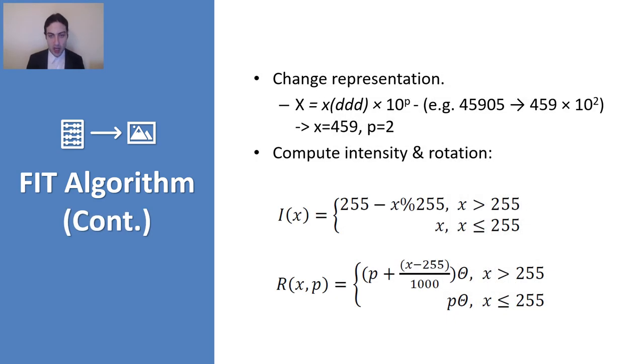So how does it exactly work? The first thing that we have to do is take a number, basically, from the feature vector. So let's say this number is X capital, right? So the first thing that we need to do is change this representation in terms of small x and p. And essentially, small x is a three-digit representation of the number. And p is the exponent, which basically, if we multiply small x by 10 to the power p, we get the original number.